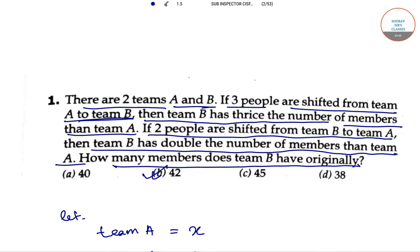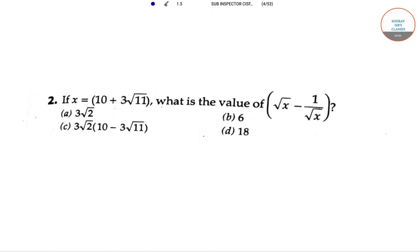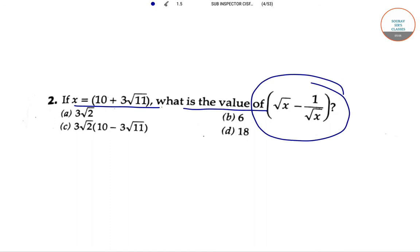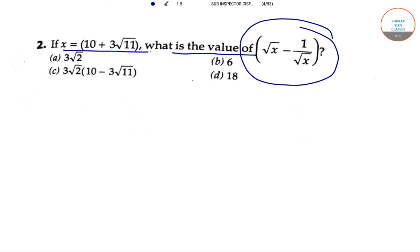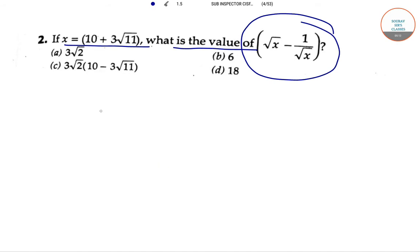So 42 is the correct answer. Let's see what we have in our next question. In the second question, the value of x is given as 10 plus 3 root over 11, and we have to find out the value of this equation: root over x minus 1 by root over x.